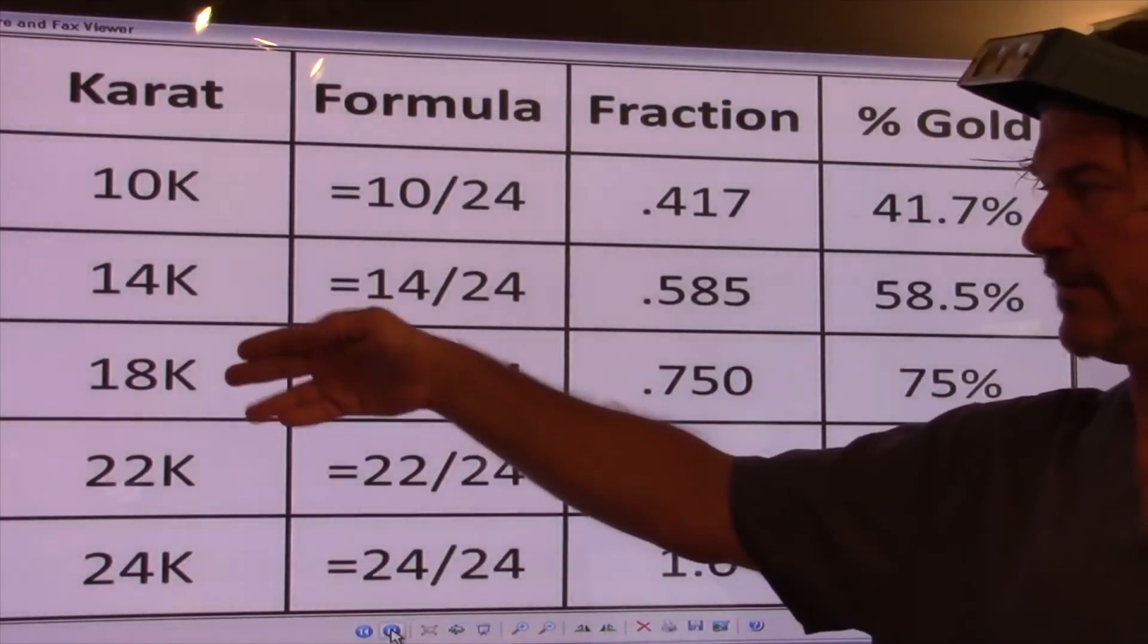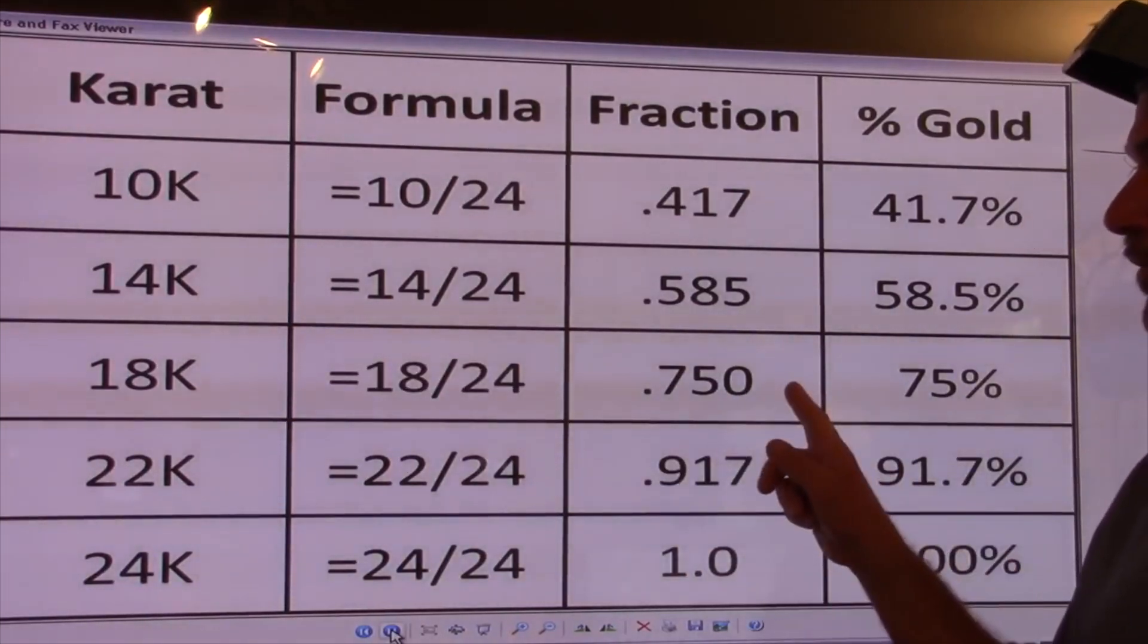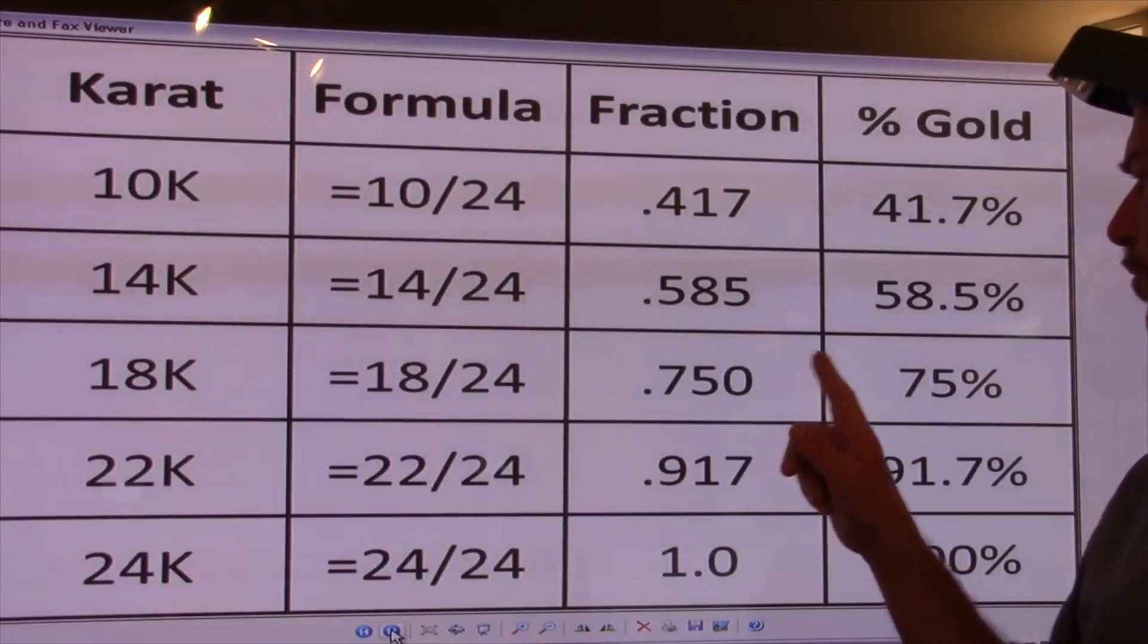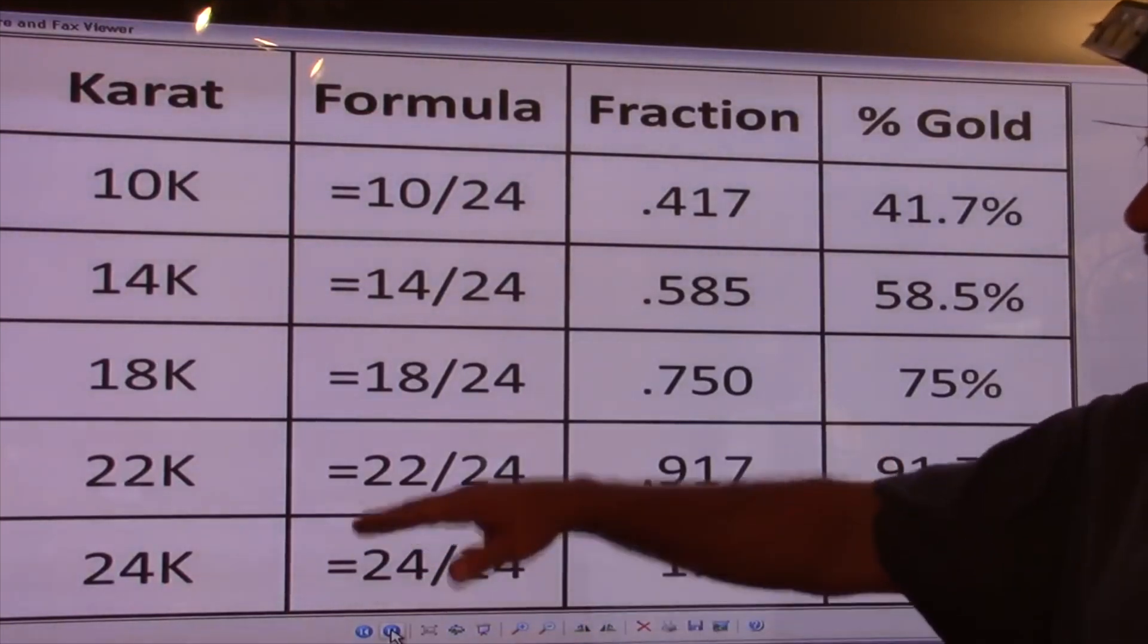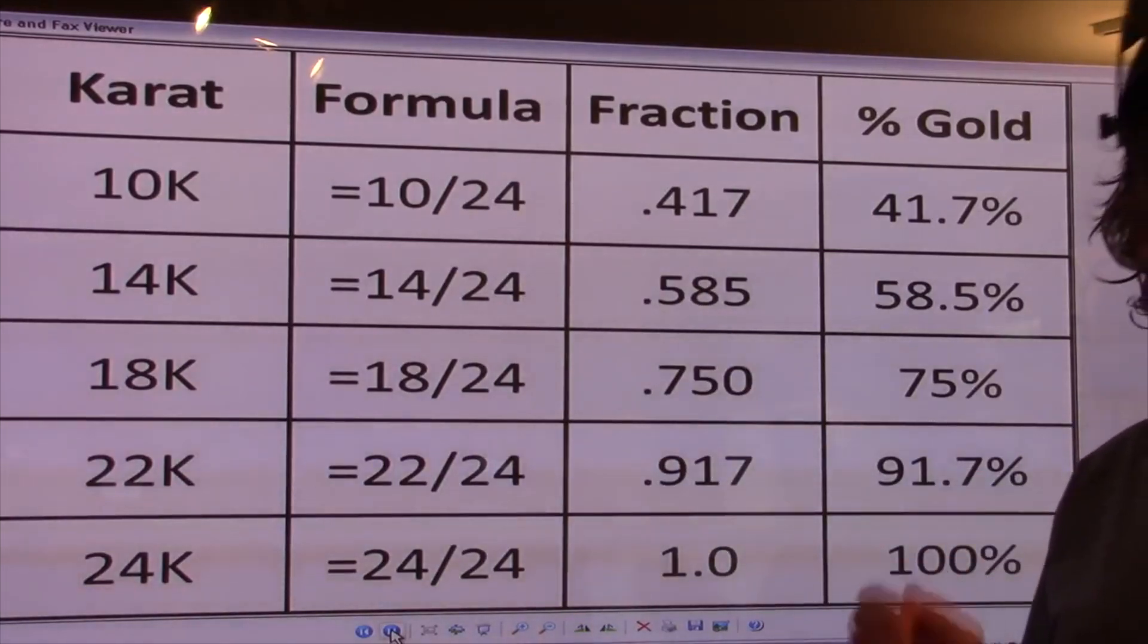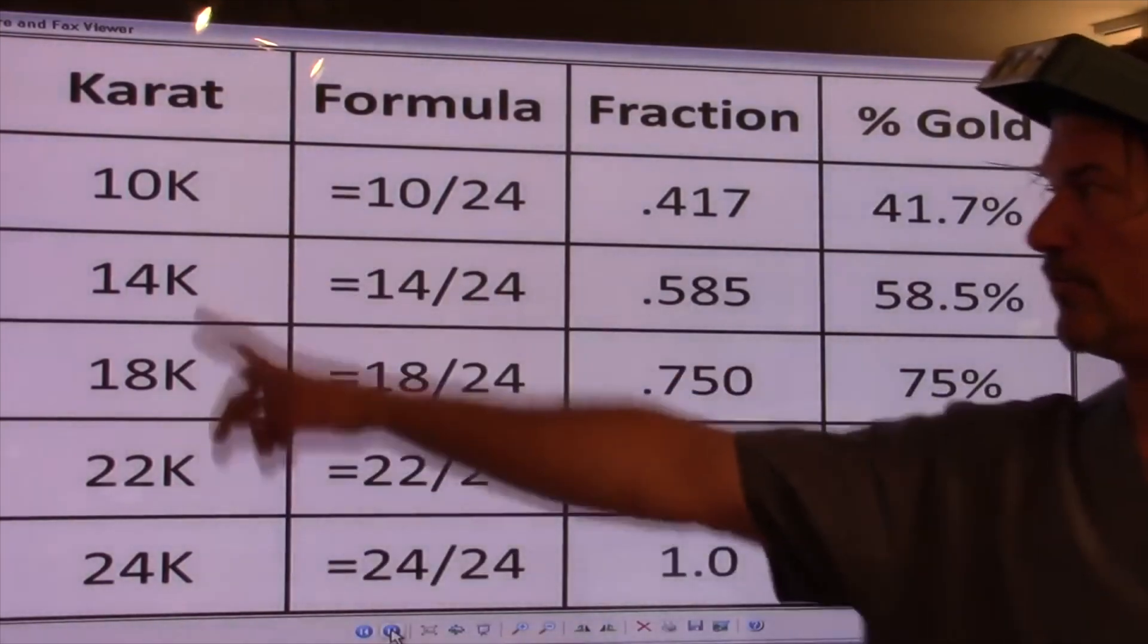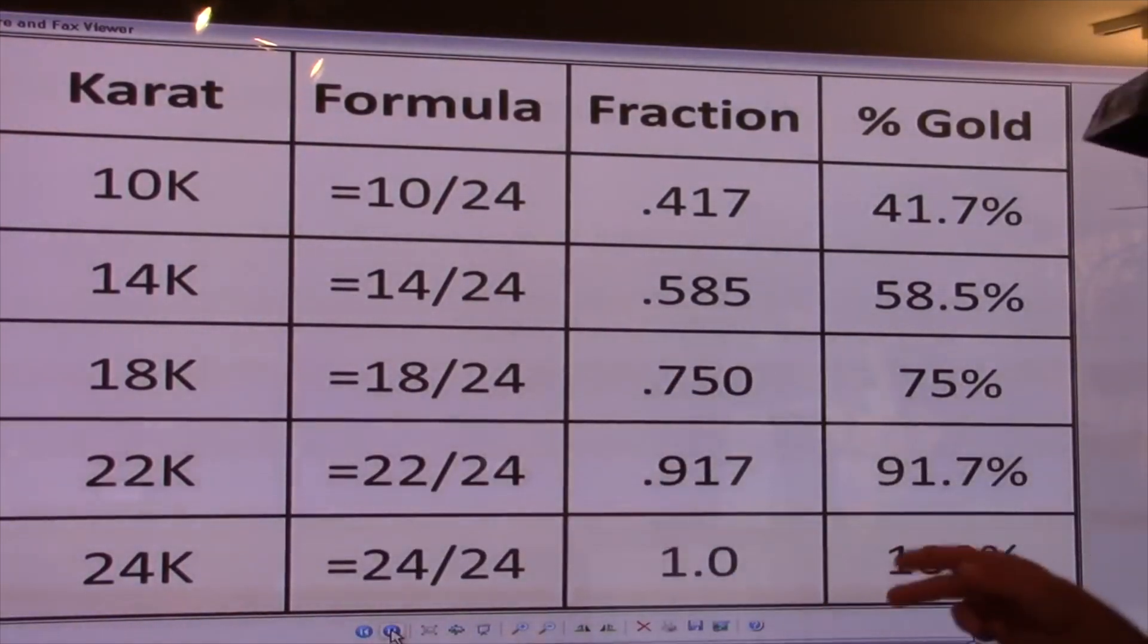The United States, 18 karat is probably the nicest that we make for the United States audience. In Europe it'll be marked 0.750 or 750, meaning it's 75% pure. It gets cheaper as you go up the scale because there's less gold in it. If you're buying gold to resell, that's all important. So this is the first thing you should learn. Maybe take a picture and put it on your cell phone so you can reference this.